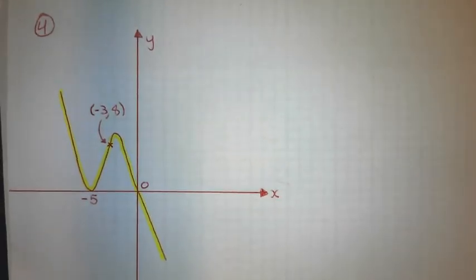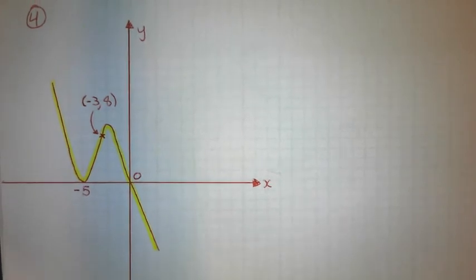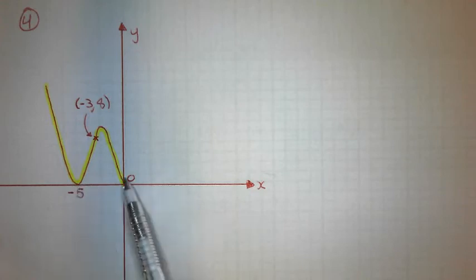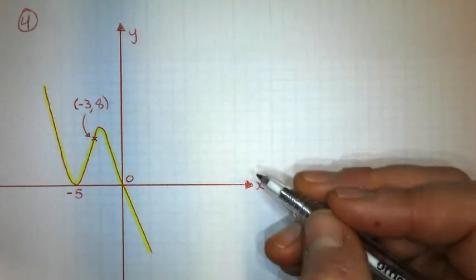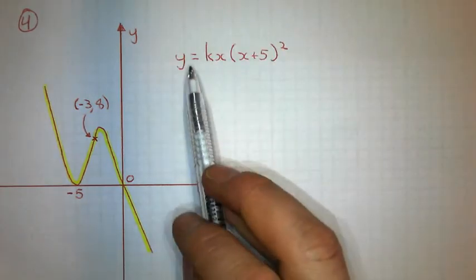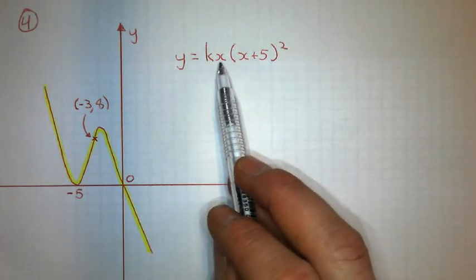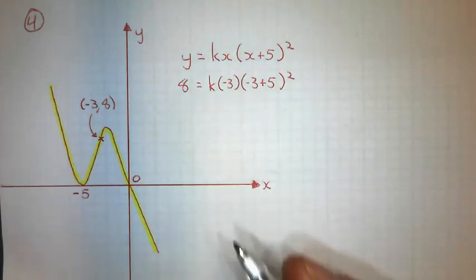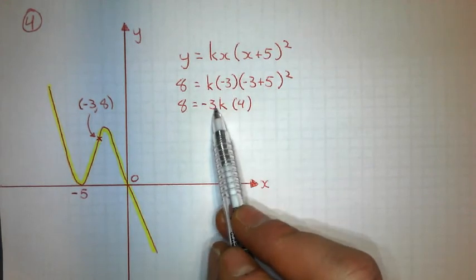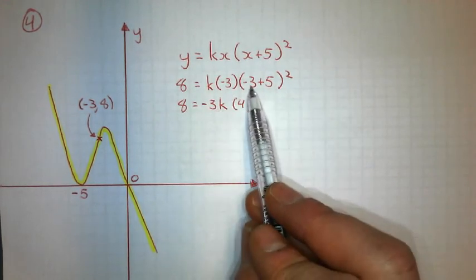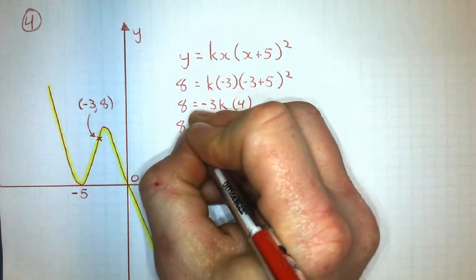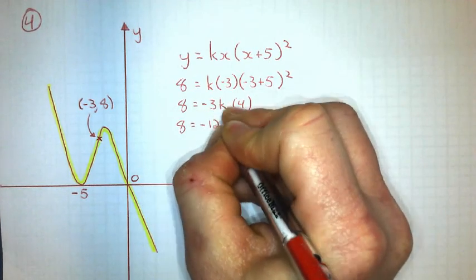We'll try one more — see if you can do this one on your own. Since the curve bounces off negative five and goes through zero, the general equation is y = kx(x + 5)². Working through the substitution: k times negative three gives −3k; negative three plus five is two, and two squared is four. Cleaning that up gives −12k on the right side.